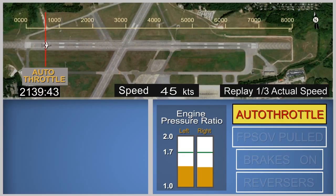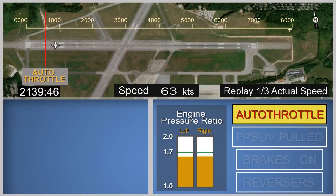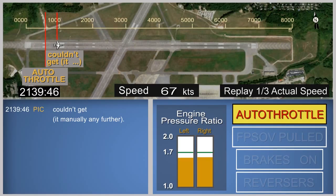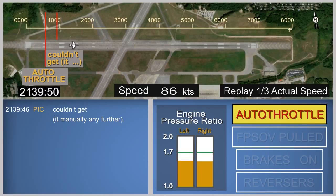The autothrottles were engaged and engine pressure ratios began to increase towards their maximum attained value of about 1.6 before reducing to about 1.5. As the engine pressure ratios reduced, the pilot in command commented "couldn't get it manually any further," which suggests that he was aware of the restriction in the throttle lever movement. The second in command called out that the airplane had reached a speed of 80 knots.